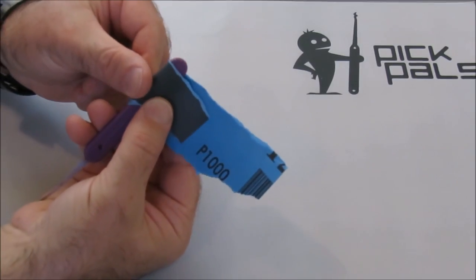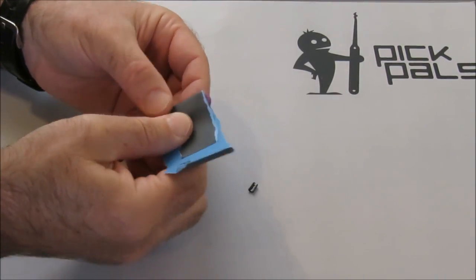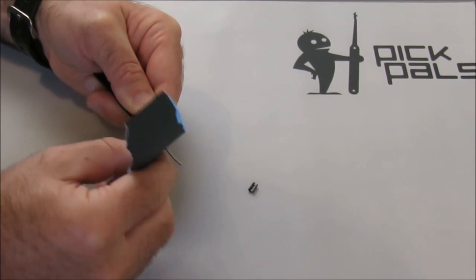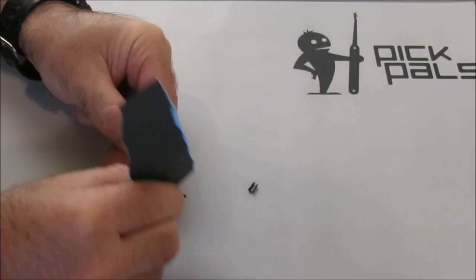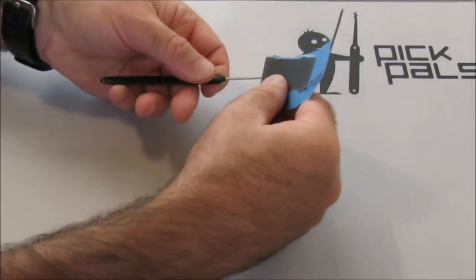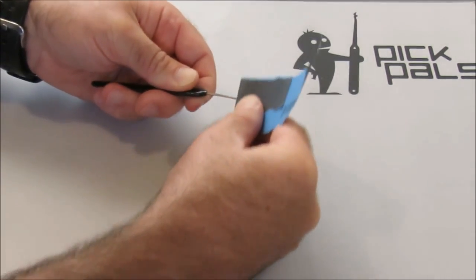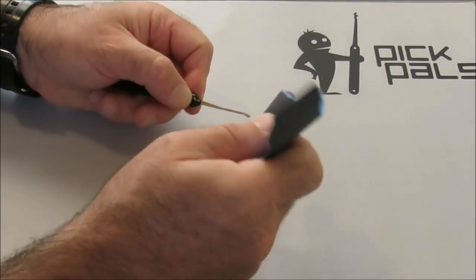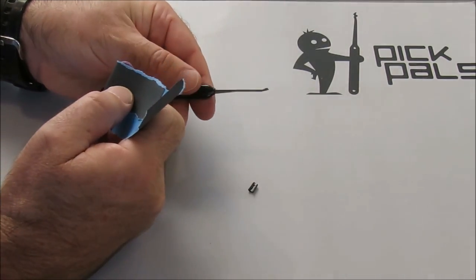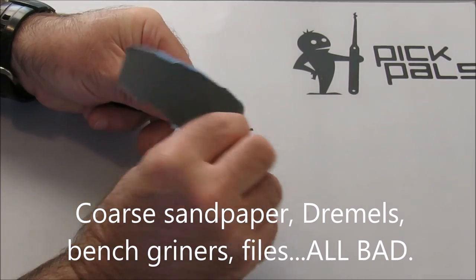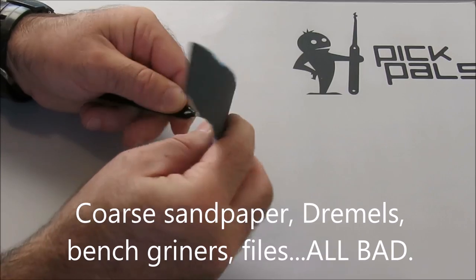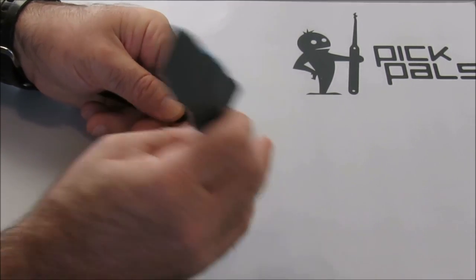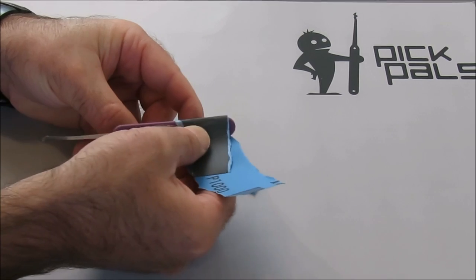Here's my thousand grit paper and what I've done is wrapped it around the handle of my Peterson pick. What we're just going to do is a little bit of work to chamfer off these edges. We're not taking off shitloads of metal. We're just taking off a little bit at a time. We're just rounding this thing off. We're not changing the shape of the pick. Let's just get in there and even out all four sides of this.